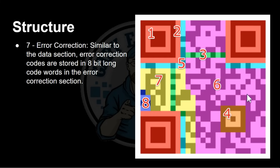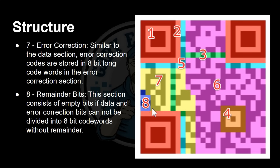Number seven, the yellow area, contains the error correction codes — additional redundancy data. We'll talk more about how it works, but basically if something is corrupted, either in the redundancy data or the data itself, it can compensate. Number eight is any padding required if data doesn't fit exactly into blocks of eight — it's filled in here and doesn't mean anything; it's just unused padding.